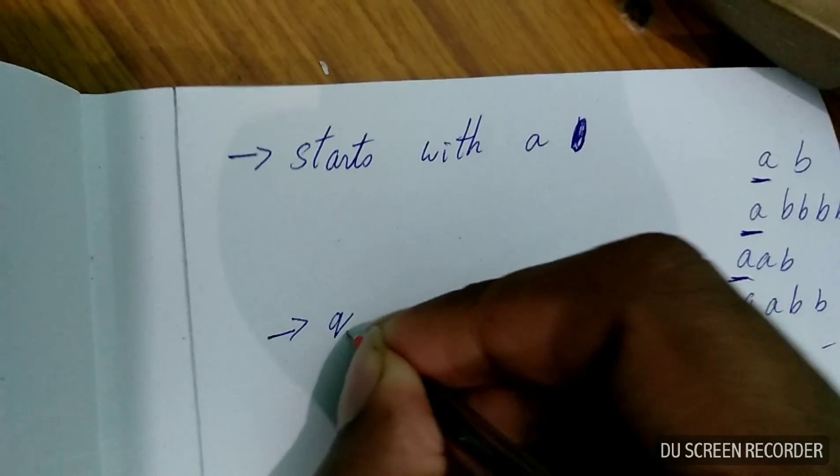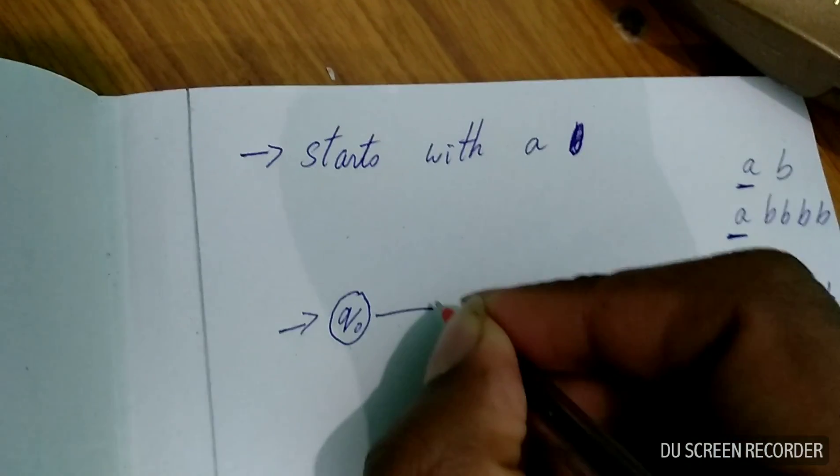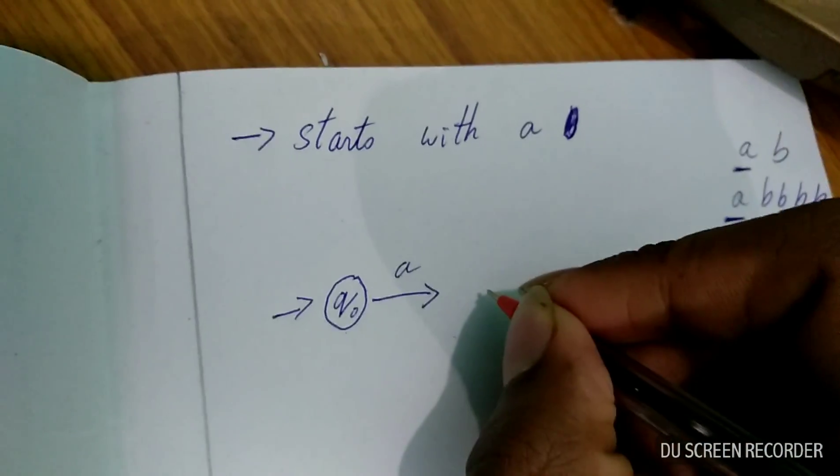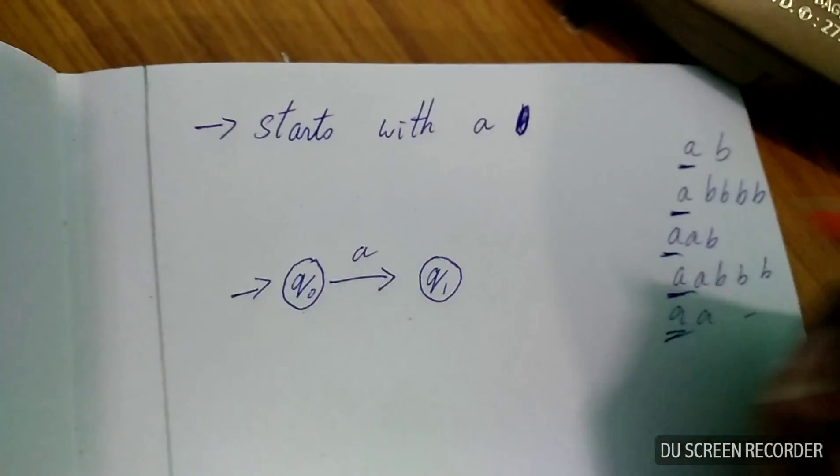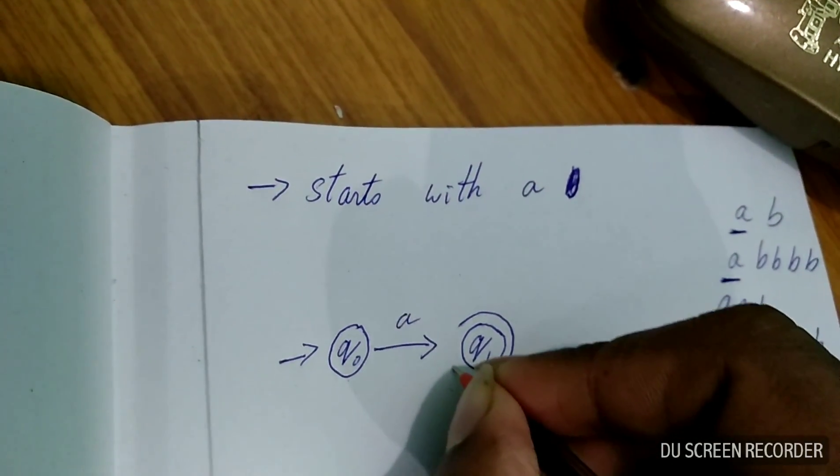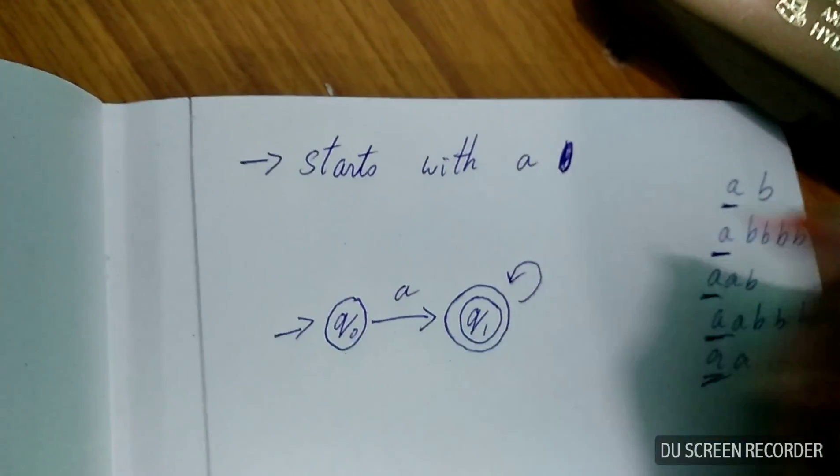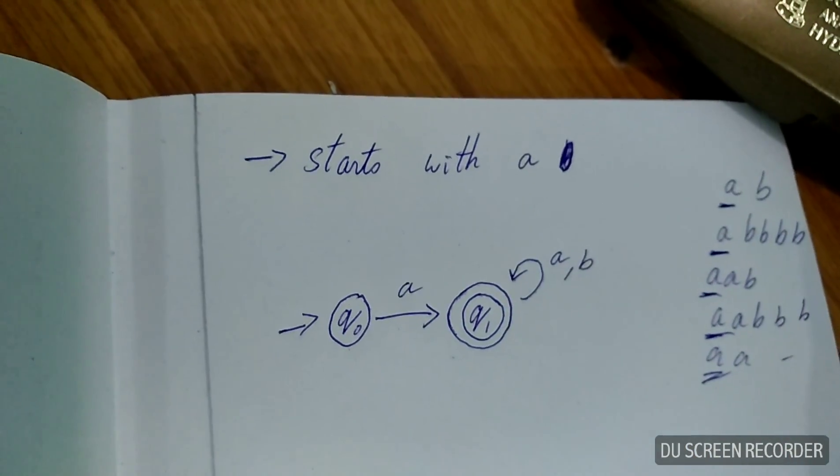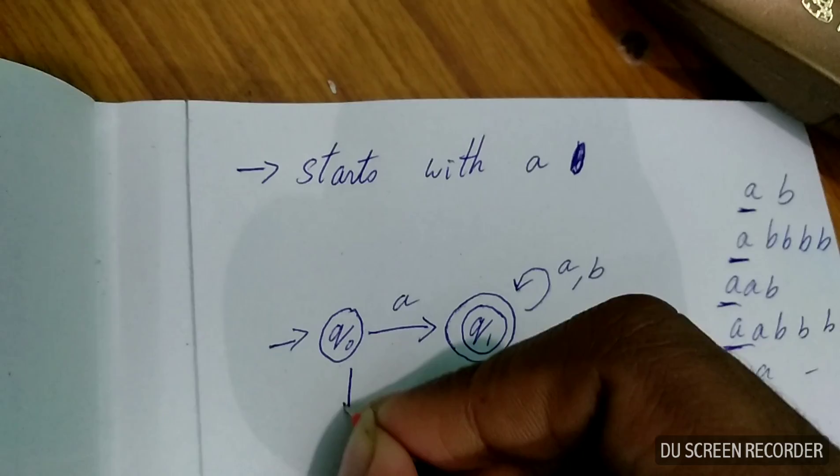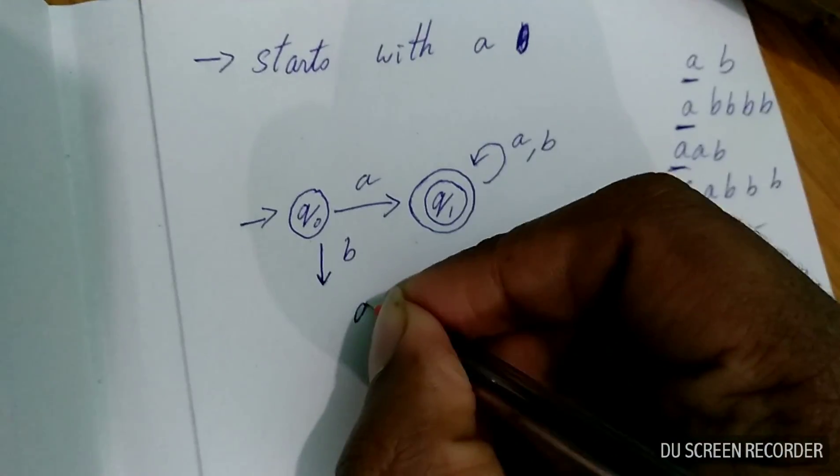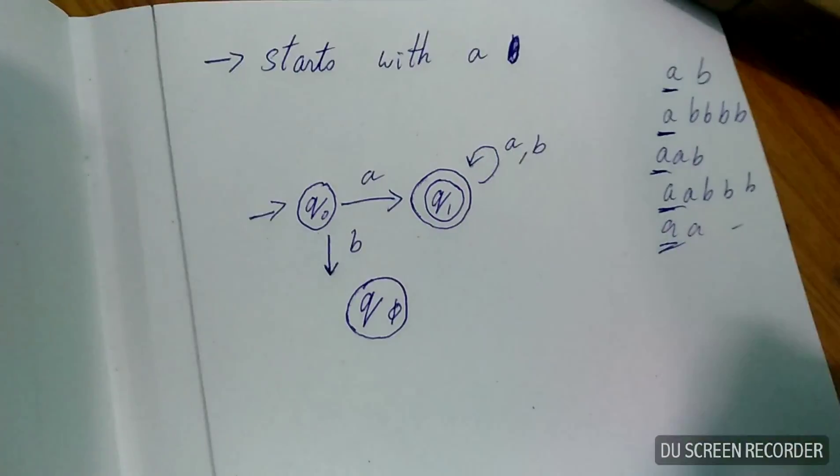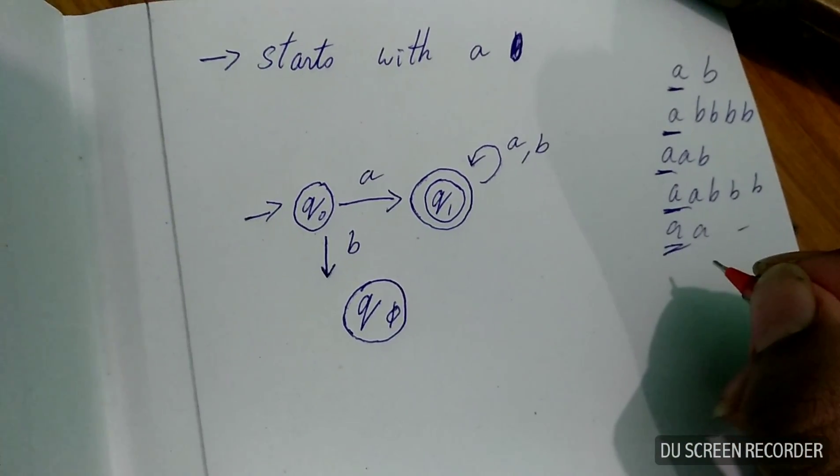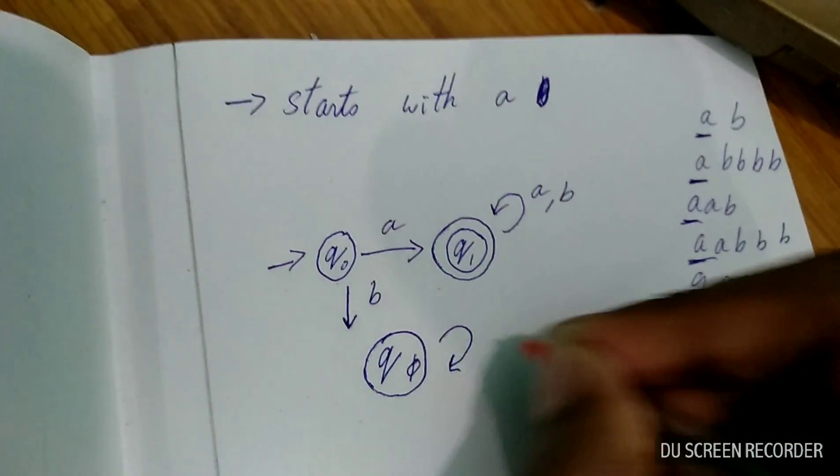So, the main thing that we have to do is: Q0, when we get A, we will go to Q1. We can make it as a final state to reduce the state. And in case if we didn't get A, we will go to a dead state. Here I'm thinking as Q5, considering Q5 as a dead state.